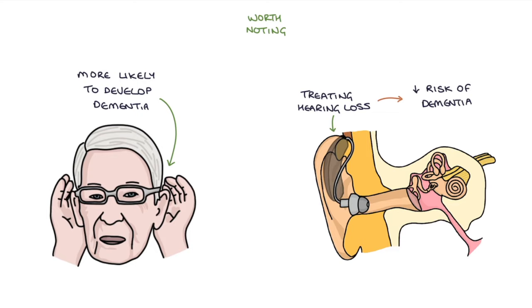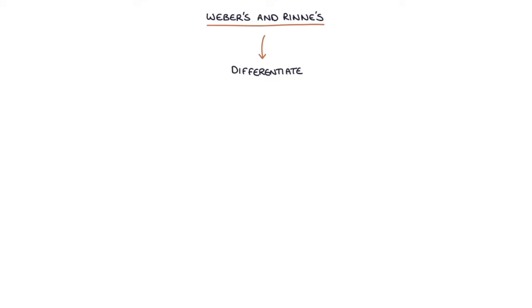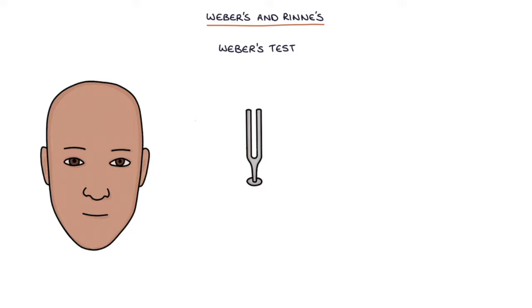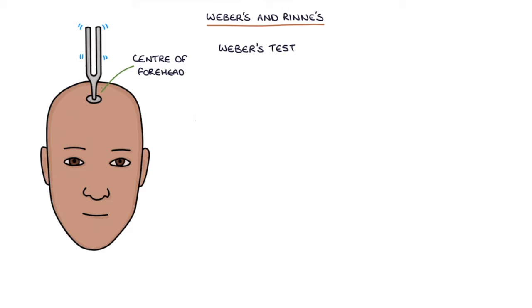Let's talk about Weber's and Rinne's tests. These are used to differentiate between sensorineural and conductive hearing loss, and a tuning fork is used to perform both tests. To perform Weber's test, strike the tuning fork to make it vibrate and hum — use the palm of your hand or your knee, not the patient. Place the tuning fork in the centre of the patient's forehead and ask the patient if they can hear the sound and which ear the sound is loudest in.